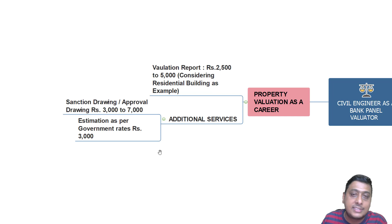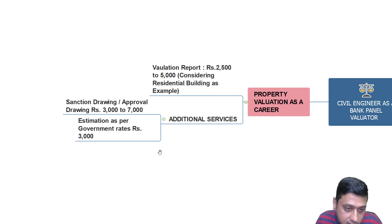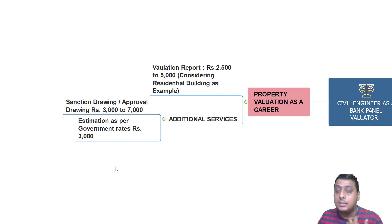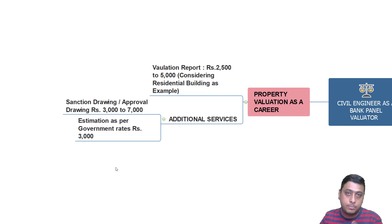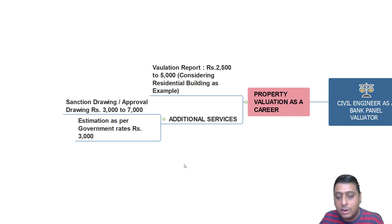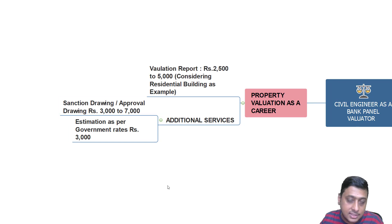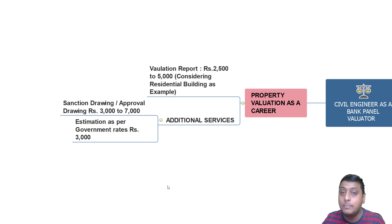If a client comes to you for a bank panel valuation to get a loan on a property, he might ask for additional services — for example, a sanction drawing or approval drawing at your consultancy for which you can charge anywhere between 3,000 to 7,000 rupees. For the sanction drawing you also have to prepare an estimation of the project using government SR rates — Schedule of Rates — referring to that book for recent updated values. For a complete set of reports for one project you can earn anywhere between 10,000 to 12,000 rupees minimum.